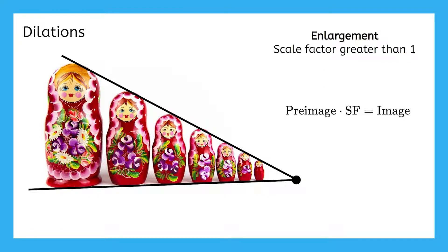We know from earlier in this course that geometry all started with points, lines, and planes, and the use of a plain old straight edge and compass. A compass is definitely not easy to use when our scale factor is not a whole number, but luckily for us, one of our dolls uses a scale factor of 6. The scale factor using the smallest doll as the pre-image and the largest doll as the image is 6. And since 6 is a whole number, let's give this straight edge and compass method a try. At this point, you would have already used a straight edge to get these lines and our center of dilation where they meet.